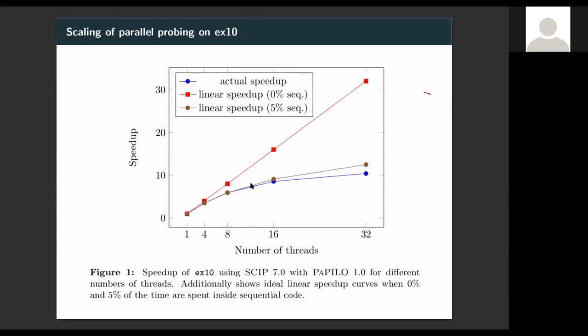There's an instance EX10 in MIPLIB 2017, which is basically solved by probing. Look at the red line. This would be an ideal linear speedup. The actual speedup that we obtain is a blue line, which might look bad on the first glance, especially for the higher number of threads. But of course, the code cannot be parallel in every part. If we have just 5% of the code that is sequential, then an ideal linear speedup curve for the remaining 95% would be the brown curve. We can see that there is some per thread overhead, but it's very small. This comes from setting up the data structures. Up to 16 threads, we almost have a perfect linear scaling for the parallel part. This is very nice.